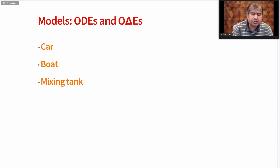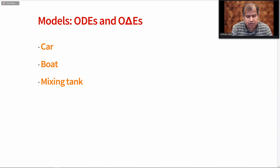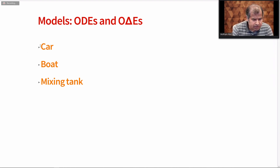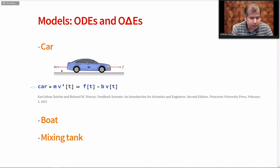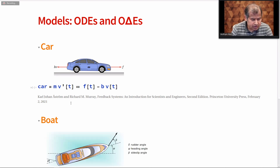The starting point is to get the model. There are various ways to get models: through system identification, from first principles, or through component-based modeling using System Modeler. In this talk, I'm not going to focus on the modeling aspect itself, but on what we can do with those models. The end result of these models are usually ODEs, differential equations, and difference equations. Here I have an example of a car model — a very simple model based on Newton's law, stating that the rate of change of momentum equals the force acting on the car minus any drag forces. That's just a first-order ODE.